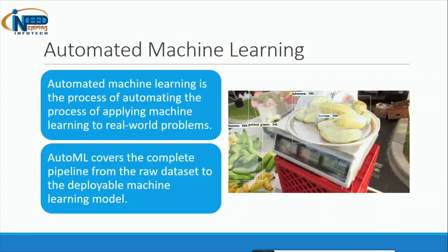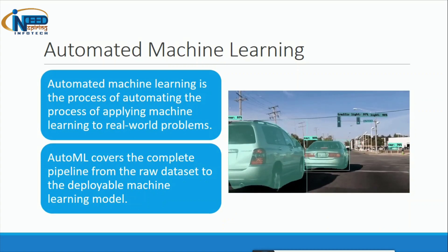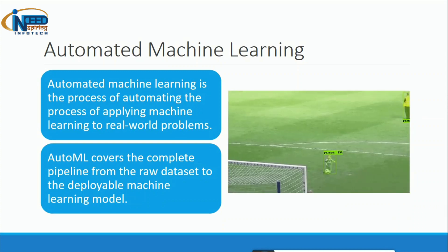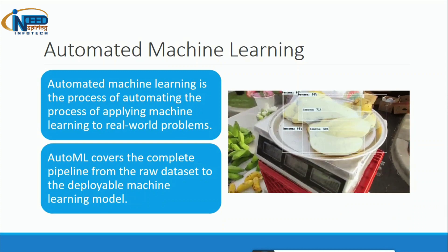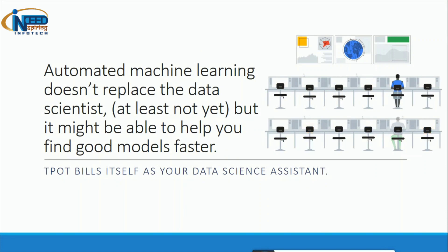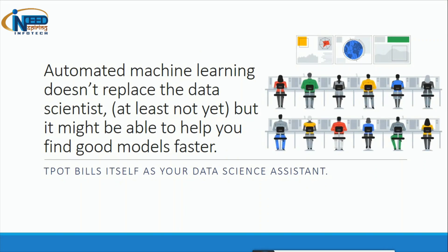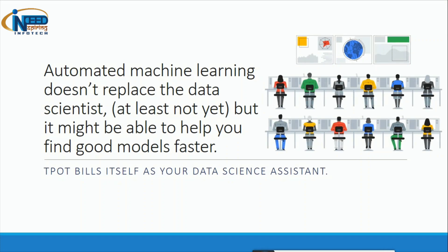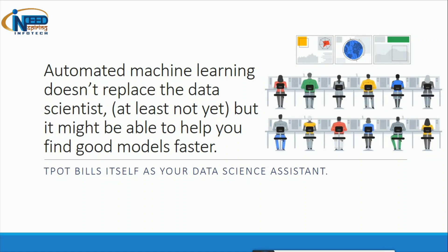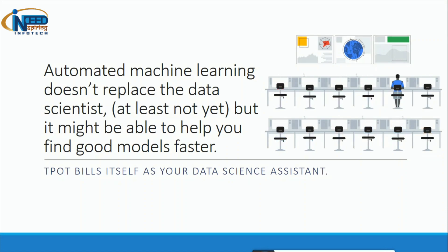AutoML covers the complete pipeline from the raw dataset to the deployable machine learning model. This doesn't mean that automated machine learning is going to replace the data scientist, at least not at this point of time. But it might be able to help the data scientist find better models faster.